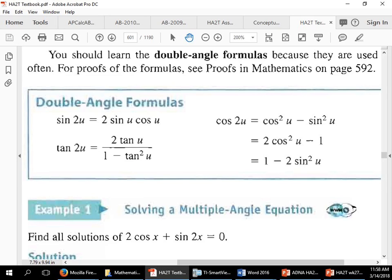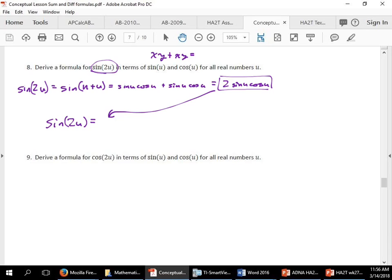Okay, let's try the next one. Okay, next one. We're doing the cosine 2u. All right, so that's going to be cosine 2u. Now, you guys do it. Use the sum formula to find the formula for cosine u.